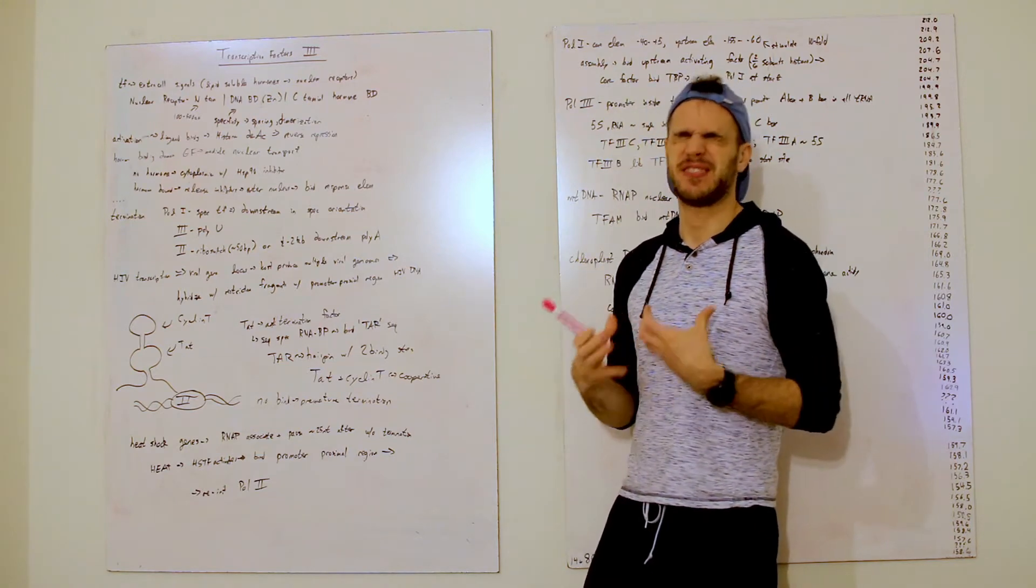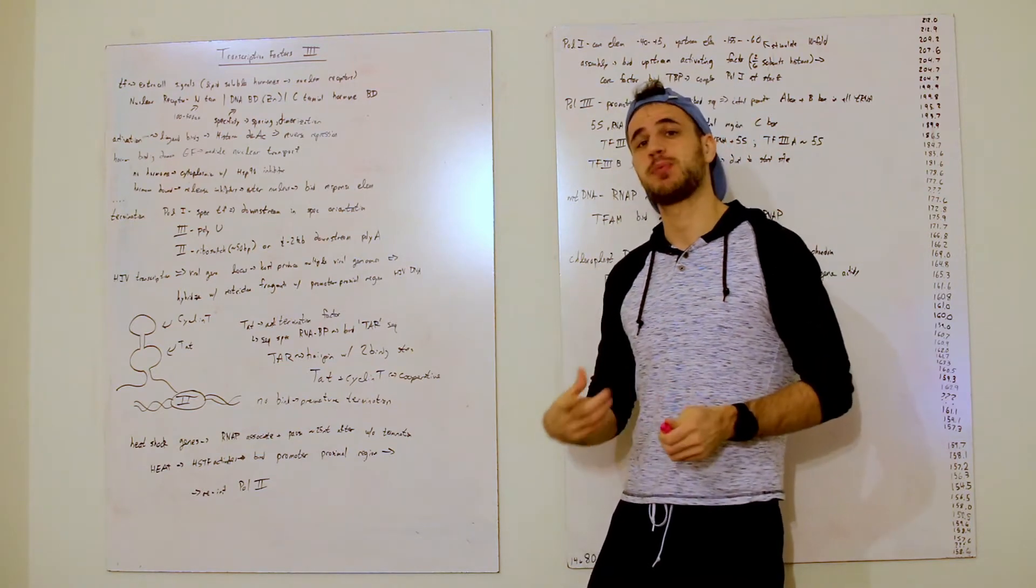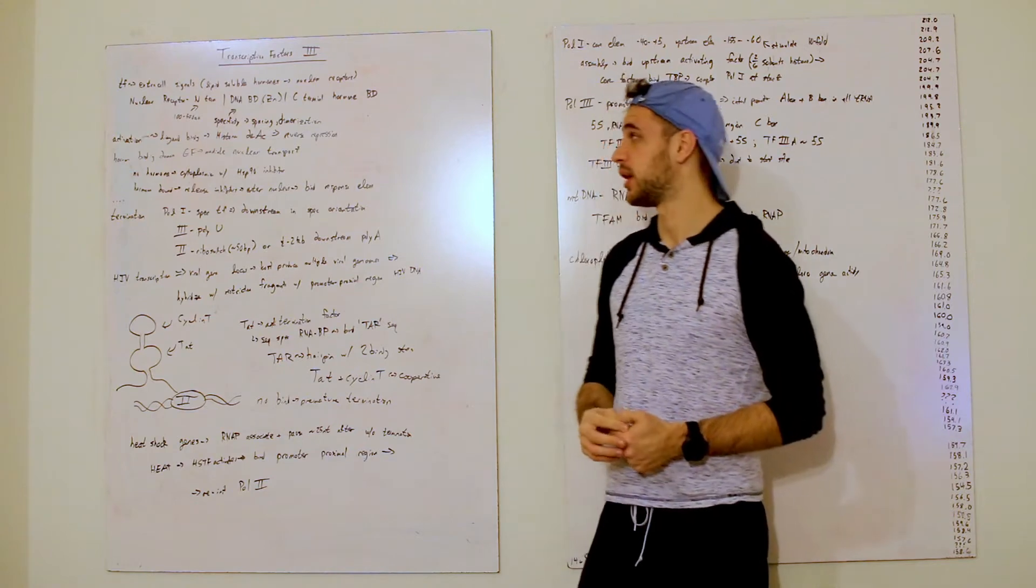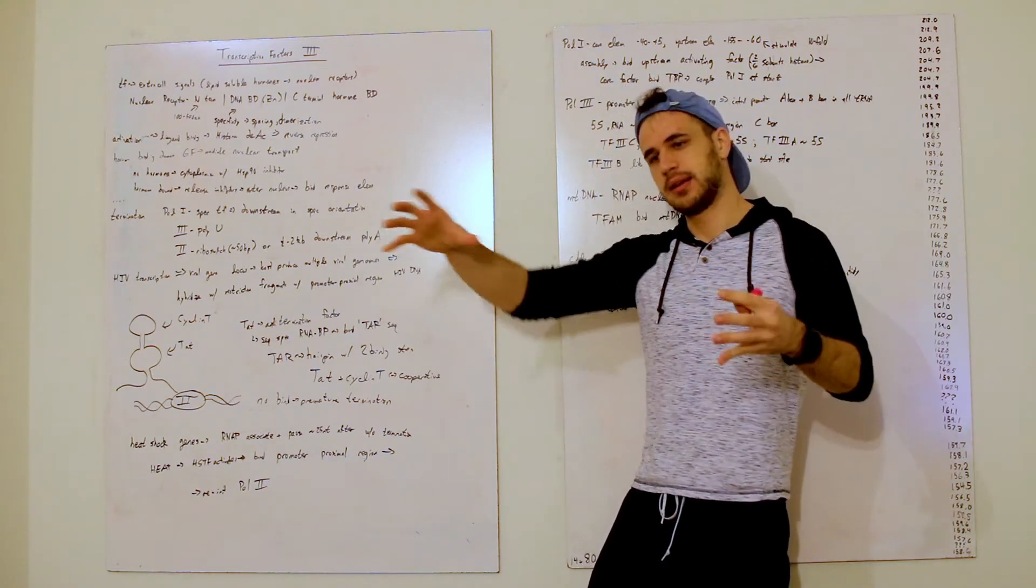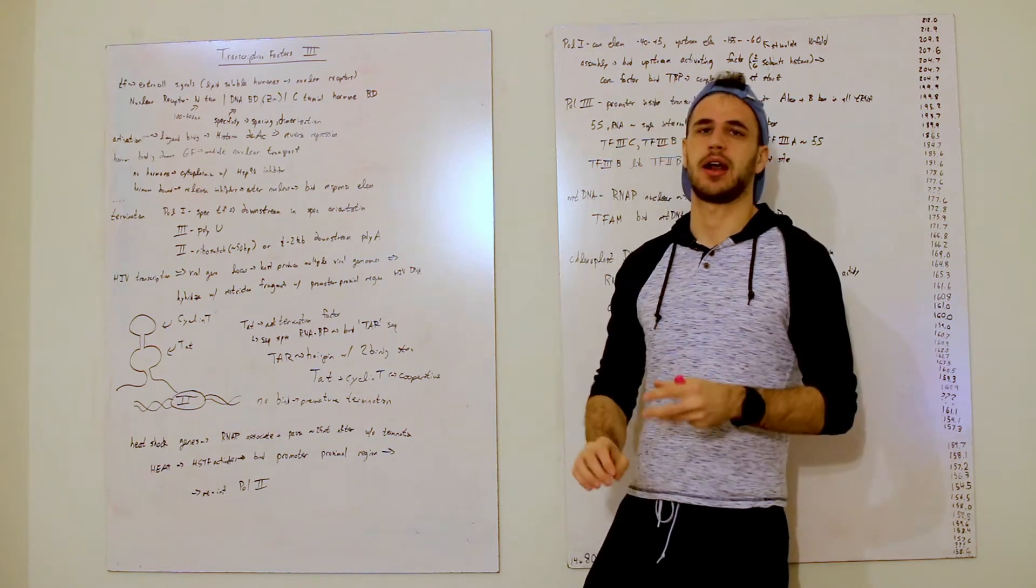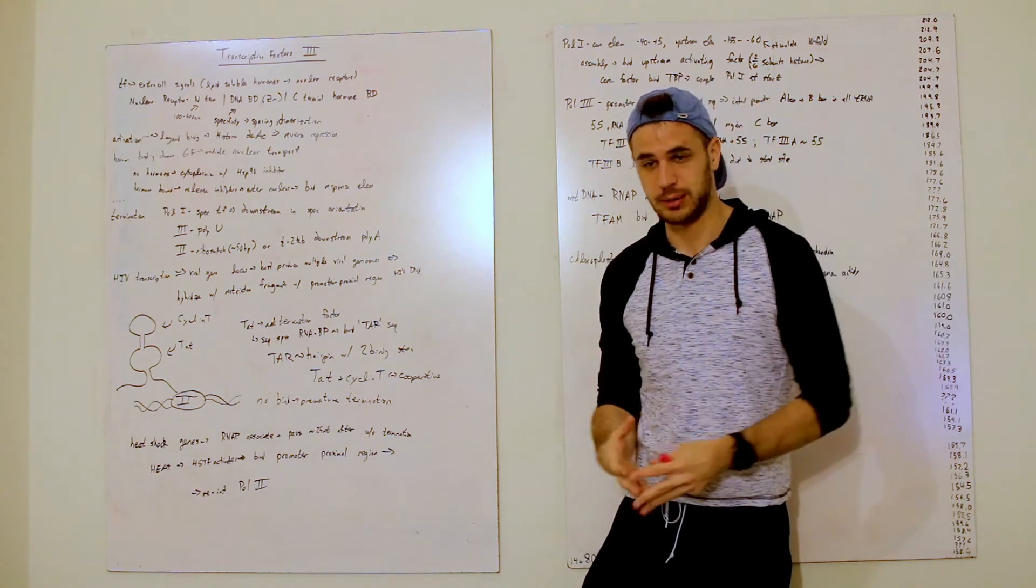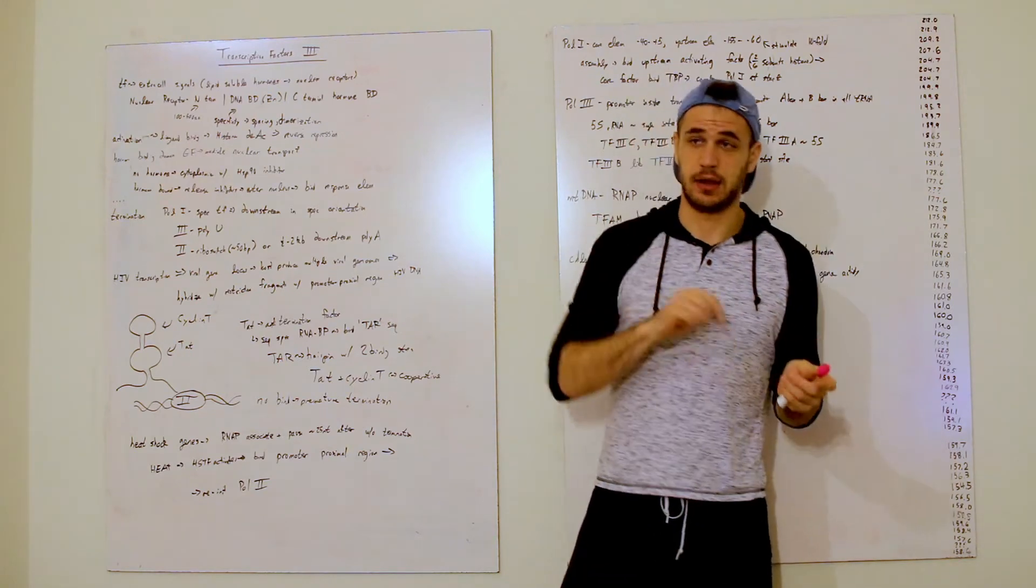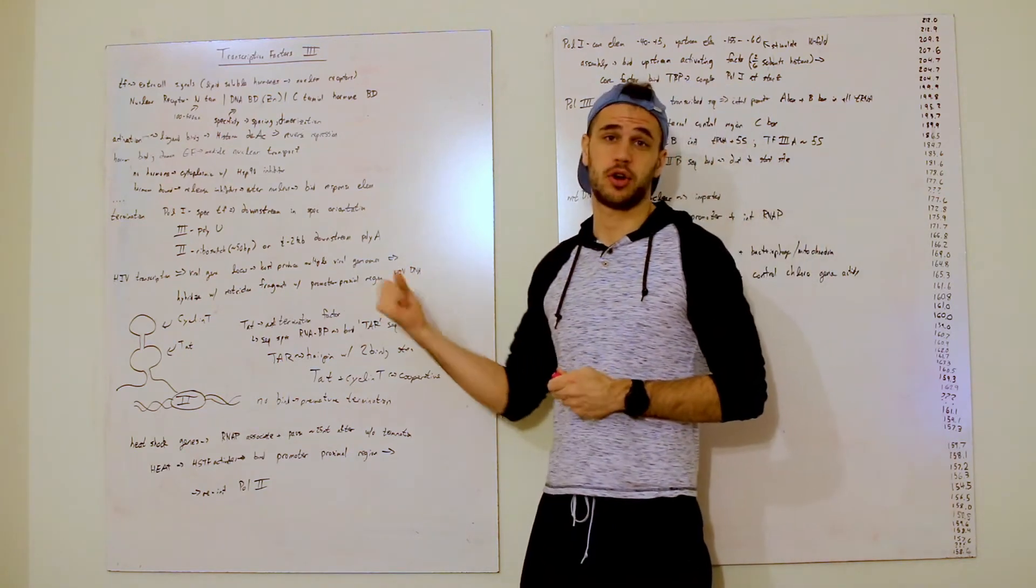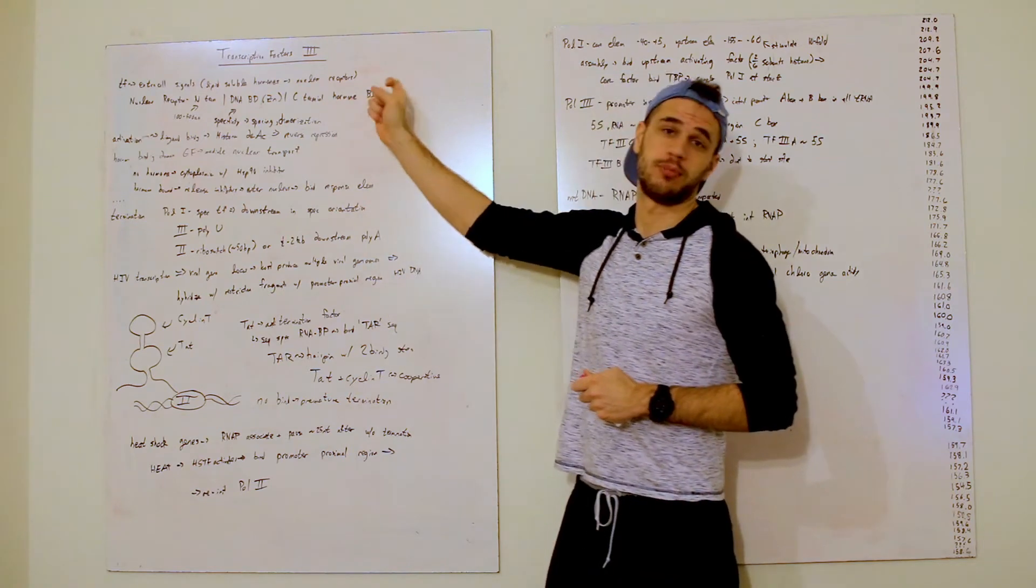However, the specificity can be reached by dimerization, typically, and as well as spacing through these dimerizations. So you get six here, six there, and a little bit here and there. So that means you actually are able to get a very specific sequence, even though it only binds six by itself. And then there's the final third domain, which is the C-terminal hormone binding domain.